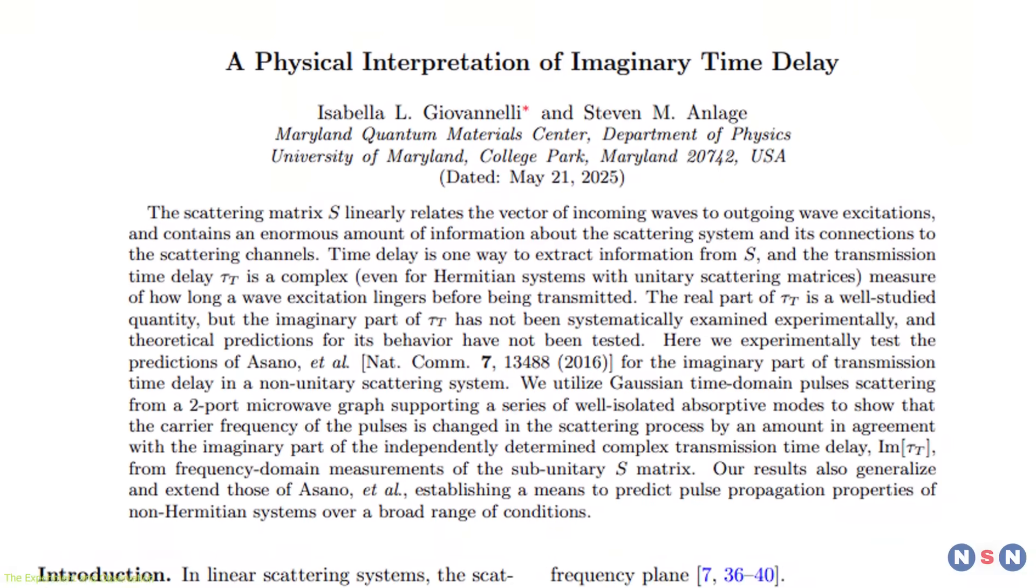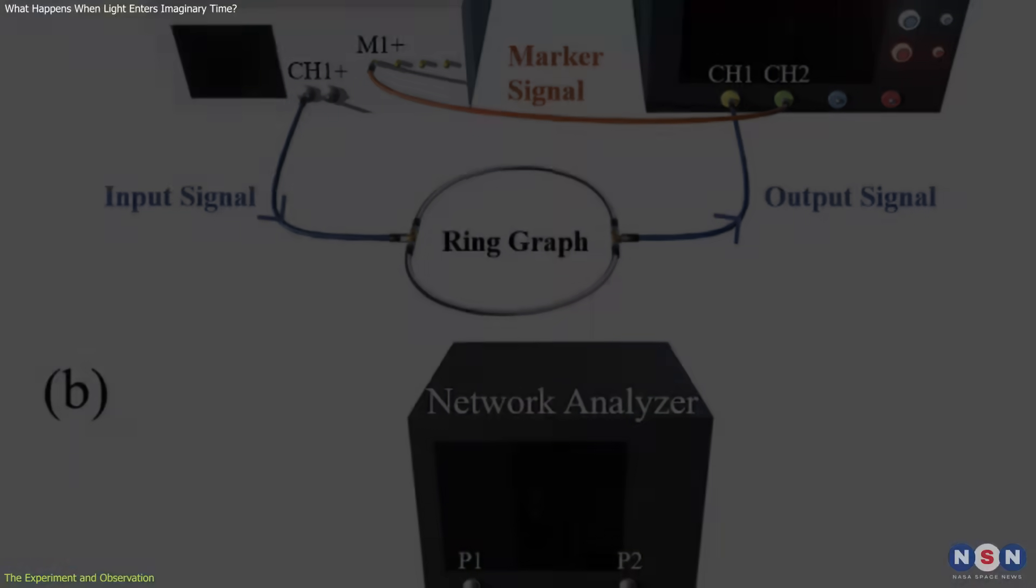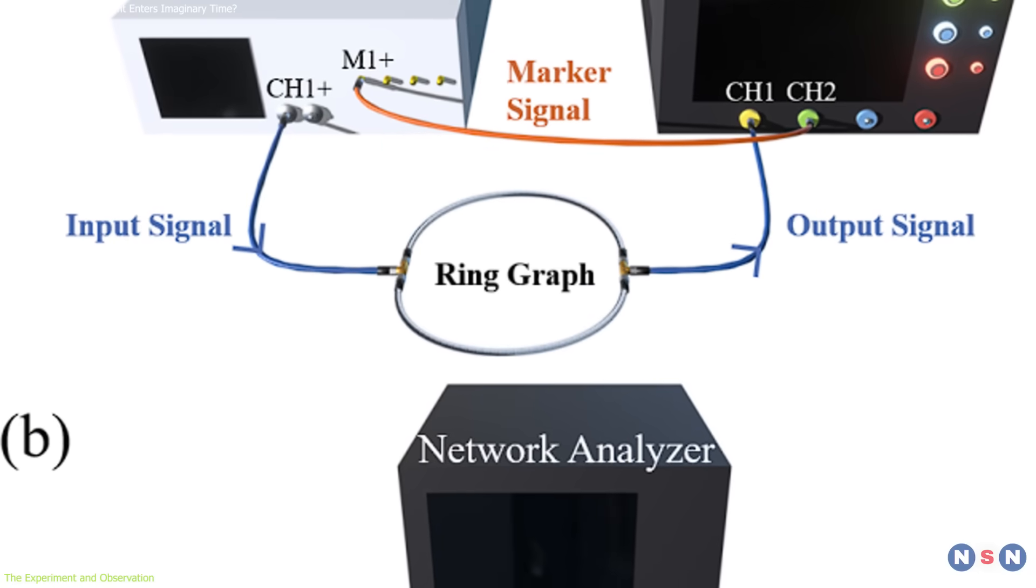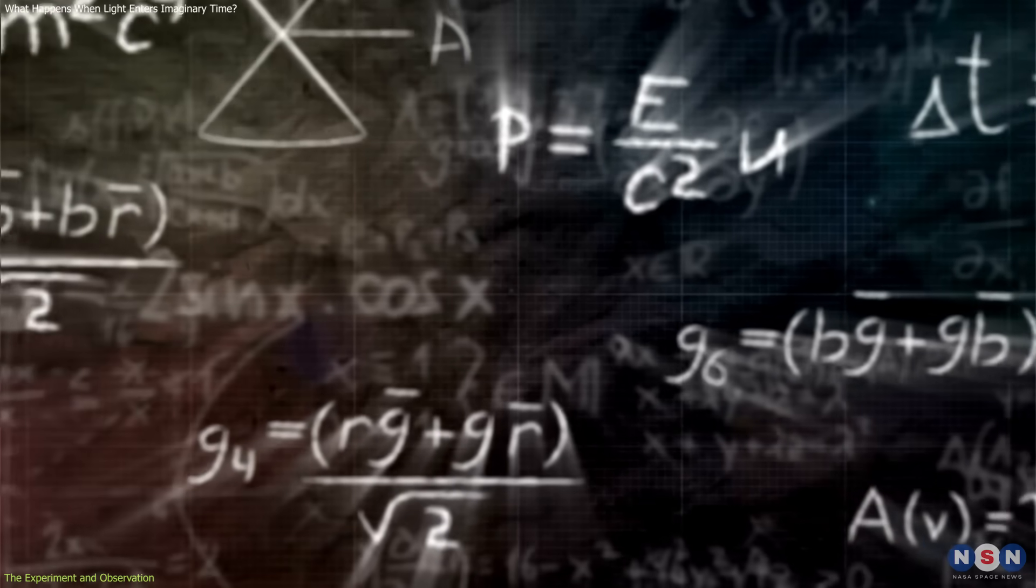Instead, the study focused on wave packets, collections of oscillating fields whose group behavior depends on the properties of the medium they pass through. Under specific conditions, light pulses showed an imaginary delay.